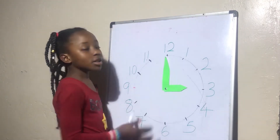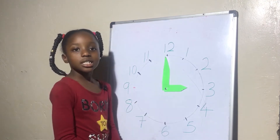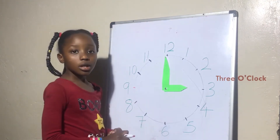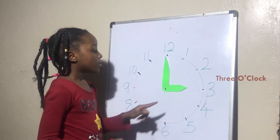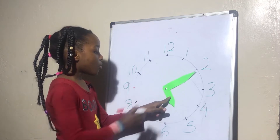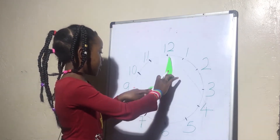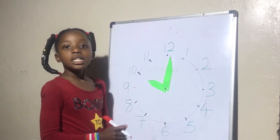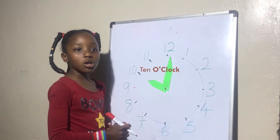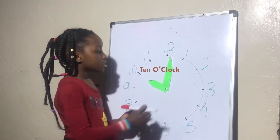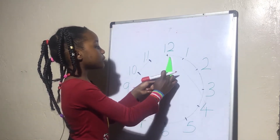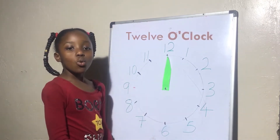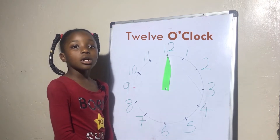Now what time is it? It is 3 o'clock. Now what time is it? It is 10 o'clock. Now what time is it? It is 12 o'clock.